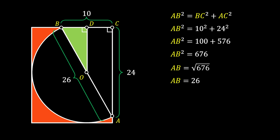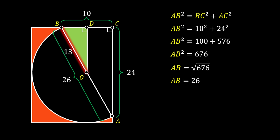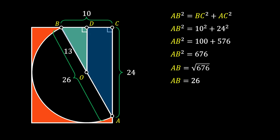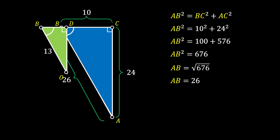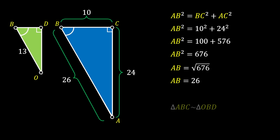Now let's take a look at the hypotenuse OB. This hypotenuse will be equal to the radius of our half circle. Since the diameter is equal to 26, the line OB must be equal to 13. Both triangles share the same angle at point B, and since both are right triangles, their third angles must also be congruent. That means triangles OBD and ABC are similar triangles.